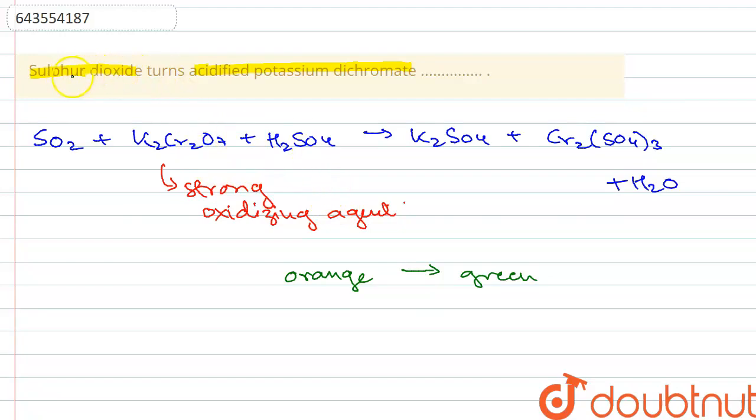So here they are saying that sulfur dioxide turns acidified potassium dichromate into green color. So that is the answer for the question. Thank you.